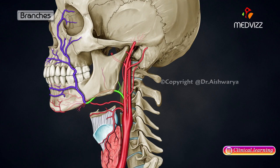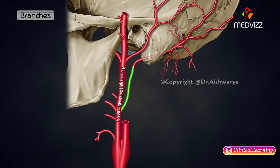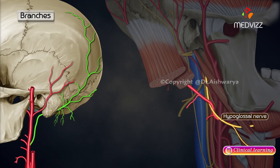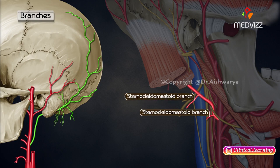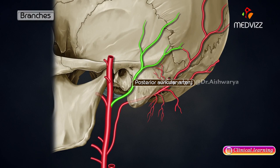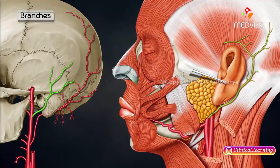The occipital artery arises from the posterior aspect of the external carotid artery, opposite the origin of the facial artery. At its origin it is crossed by the hypoglossal nerve. In the carotid triangle, the artery gives two sternocleidomastoid branches, where the upper branch accompanies the accessory nerve and the lower branch arises near the origin of the occipital artery.